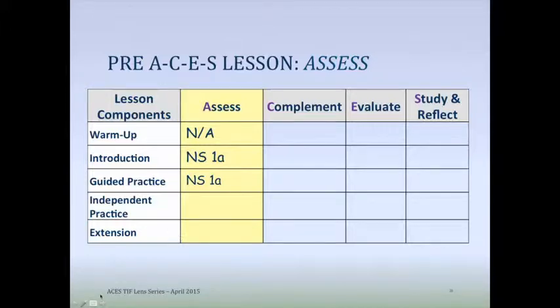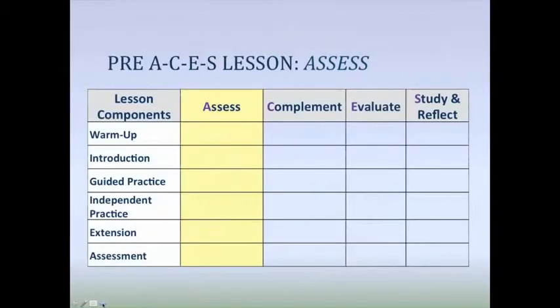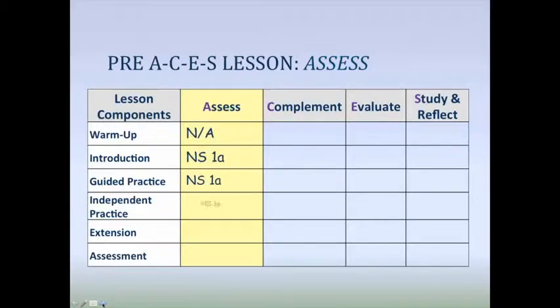For the independent practice in the pre-ACES lesson, students were performing their online learning style inventory — given 10 to 15 minutes to complete 24 questions, with a paper version available if technology wasn't available. Which skill or sub-skill did you find in the independent practice? We were sticking with 1A, but we could also get 'follow standard procedures and protocols regarding behavior and tasks' — like turning off their cell phone in the computer lab and using the computer properly.